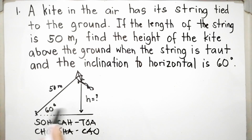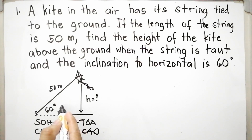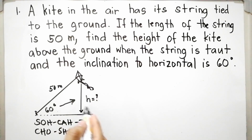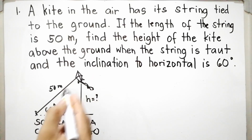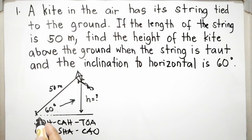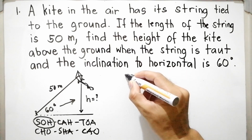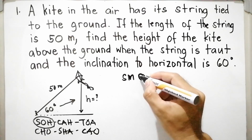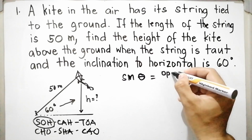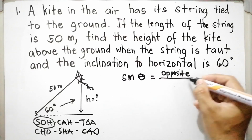The given values are the angle of elevation, the opposite side to that angle which is the height, and the length of the string which is the longest side — the hypotenuse. Since we have opposite and hypotenuse, we look at the mnemonic SOH, which stands for the sine function. Sine theta equals opposite over hypotenuse.